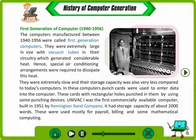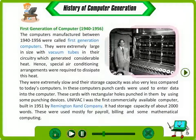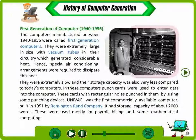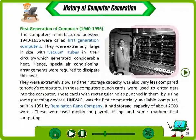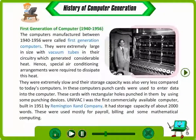They were extremely slow and their storage capacity was also very less compared to today's computers. Punch cards were used to enter data into the computer — cards with rectangular holes punched in them using punching devices. UNIVAC 1 was the first commercially available computer, built in 1951 by Remington Rand Company. It had a storage capacity of about 2000 words. These were used mostly for payroll, billing and some mathematical computing.